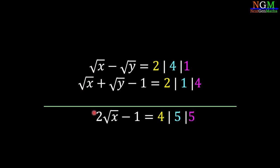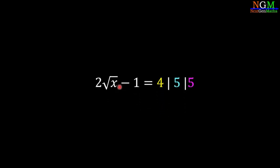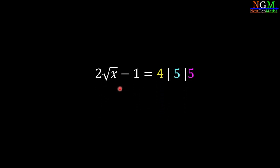Adding the equations: root x plus root x equals 2 root x, and the minus root y cancels with plus root y. Moving minus 1 to the right-hand side, we get 2 root x equals 4 plus 1, 5 plus 1, or 5 plus 1, giving 2 root x equals 5, 6, and 6 for the three cases respectively.